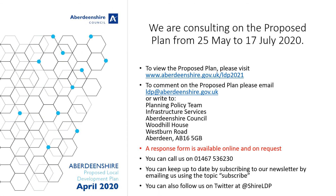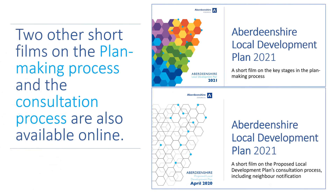If you wish to make a representation on the proposed plan, we have prepared a response form which is available online and we would encourage you to use it. Comments on the proposed plan can be emailed to us at ldp@aberdeenshire.gov.uk or by writing to the Planning Policy Team, Infrastructure Services, Aberdeenshire Council, Whittle House, Westburn Road, Aberdeen, AB16 5GB. If you wish to subscribe to our newsletter, please email us. We have also produced two short films on the plan making process and on the proposed plan consultation process, which are available online.